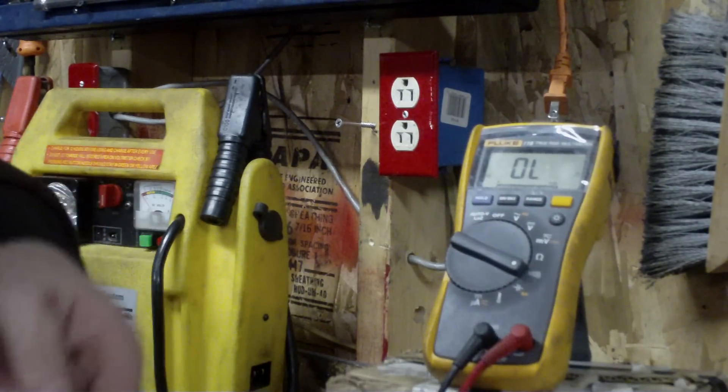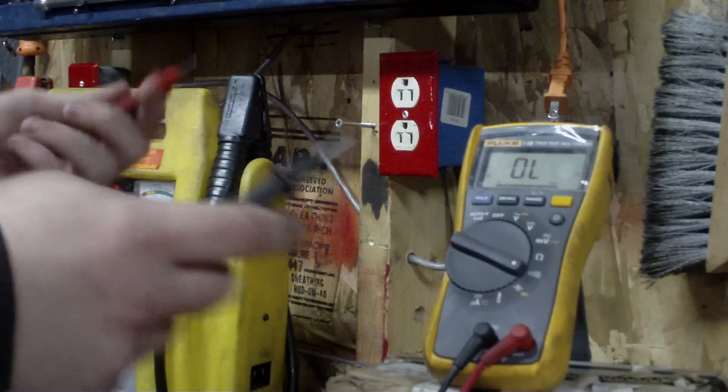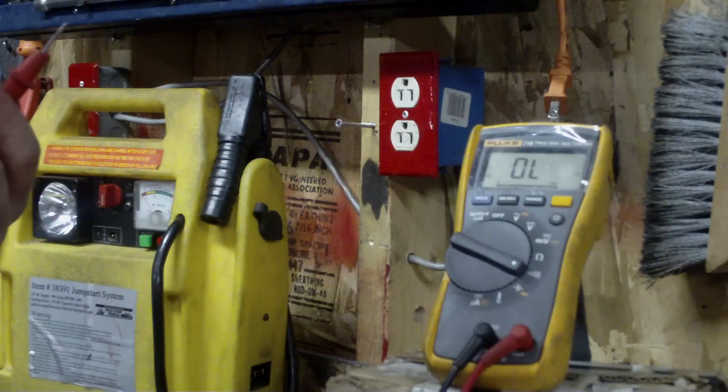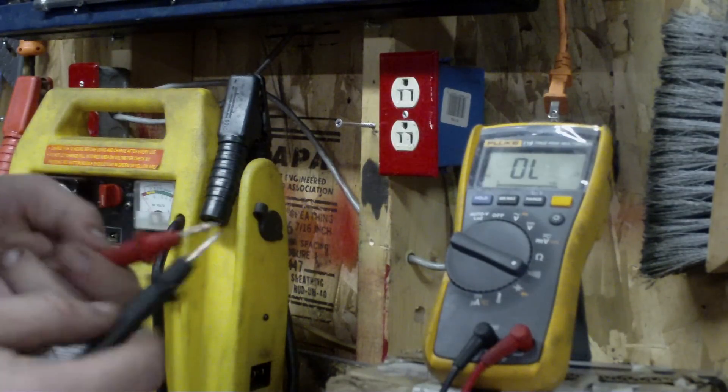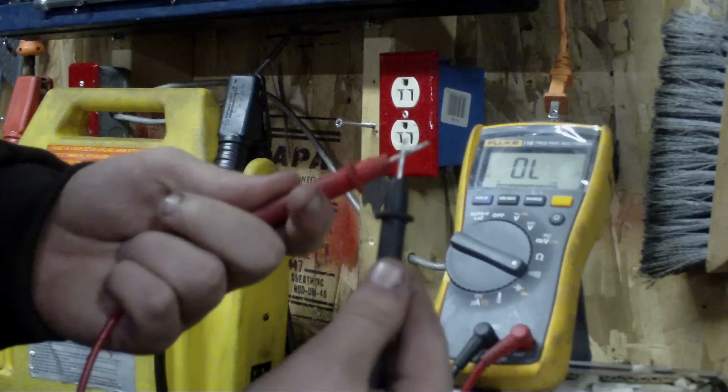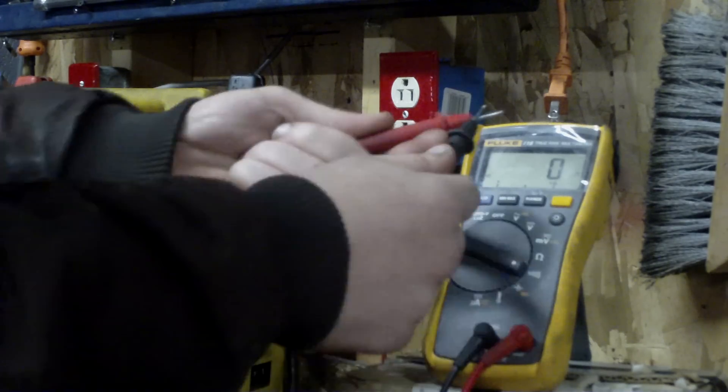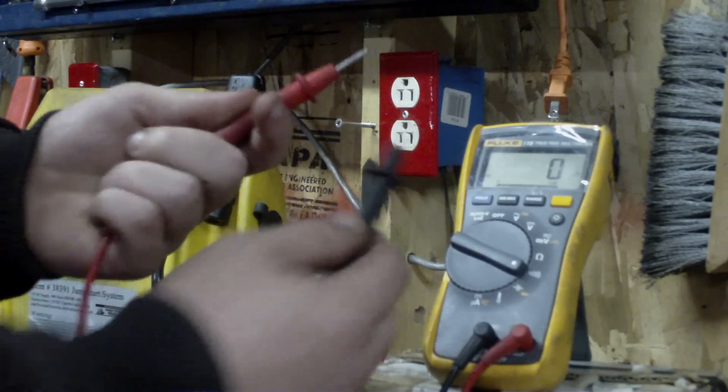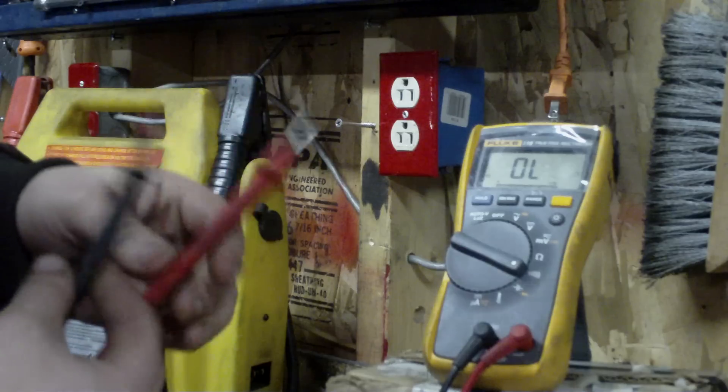And continuity is real handy for checking switches, lights, anything like that. When the red touches the black, it beeps and tells you zero ohms, which lets you know your voltage is going all the way through it.